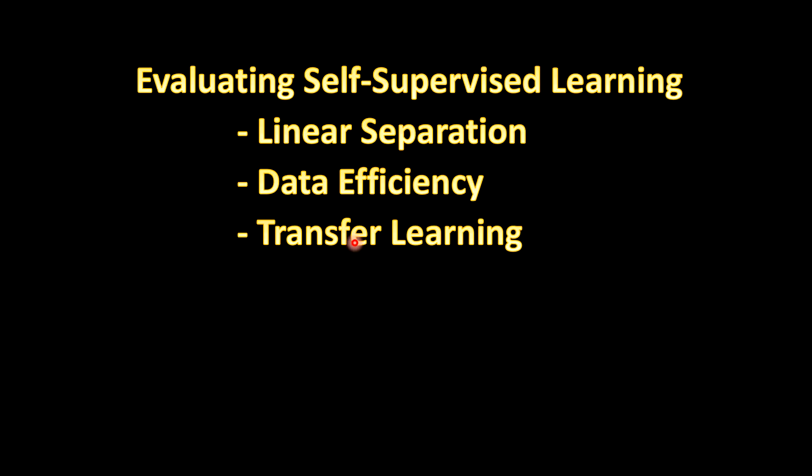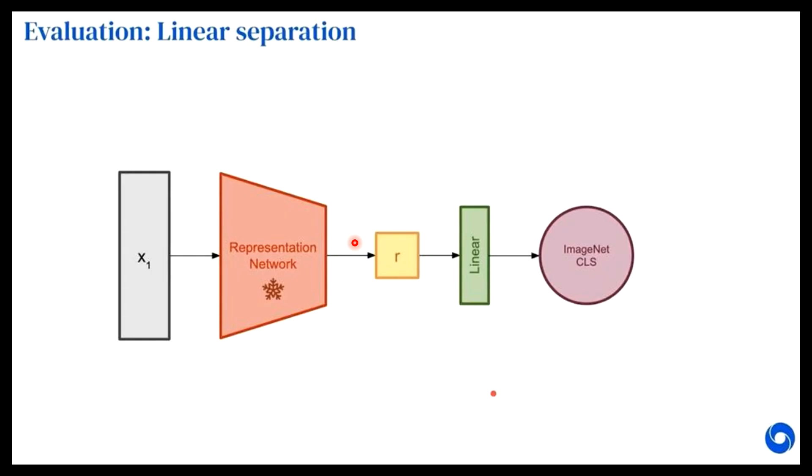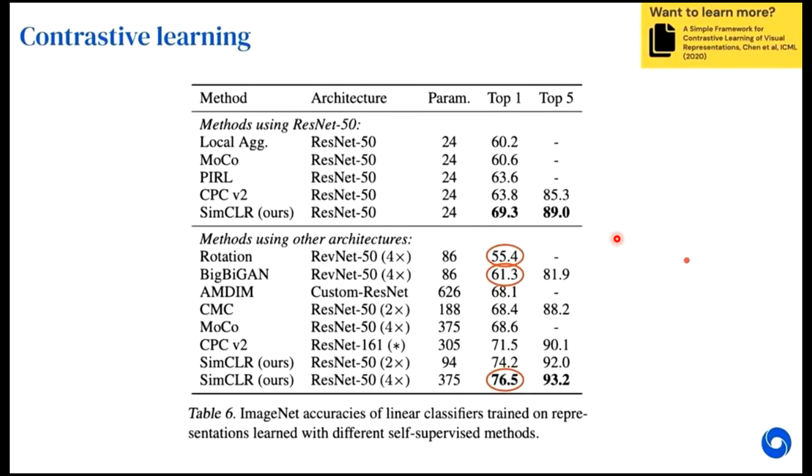So let's quickly go over these three sections described in the workshop. The first is linear separation. So that's what we just discussed. Again, this slide I'm using is from their workshop. So we have this input, you have this representation network and it has learned the representation. You simply add a linear classifier, for example the logistic regression, and then you do your classification. So here it's the image classification on the ImageNet dataset and you report your accuracy.